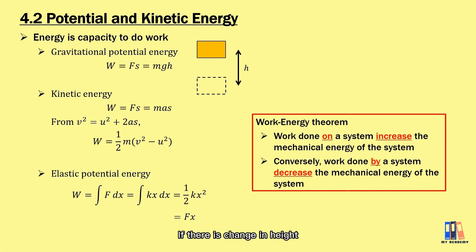If there is change in height or position in the gravity field, we have change in gravitational potential energy. If there is change in velocity of object, there is change in kinetic energy. And if there is extension or compression of spring, we have change in elastic potential energy.